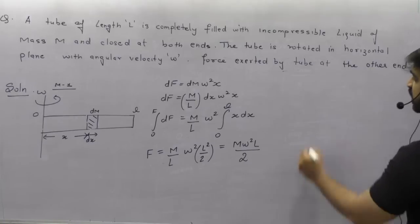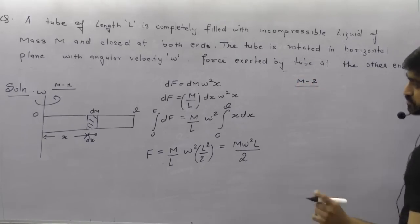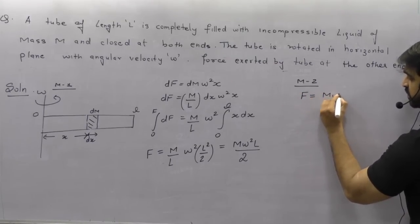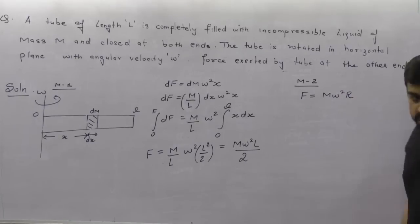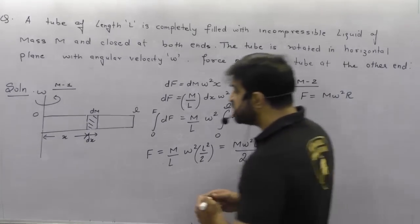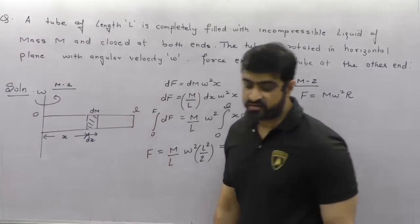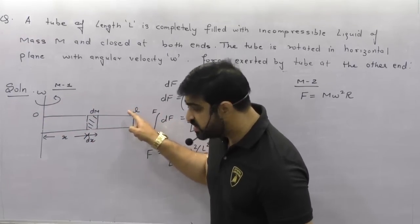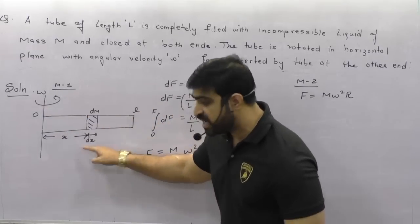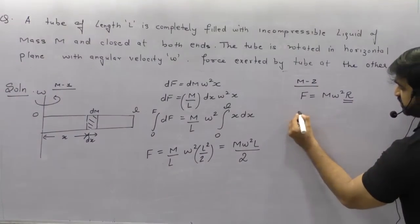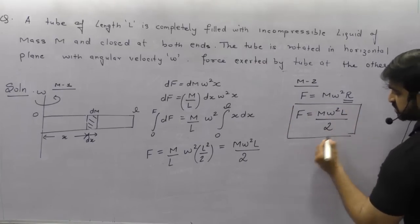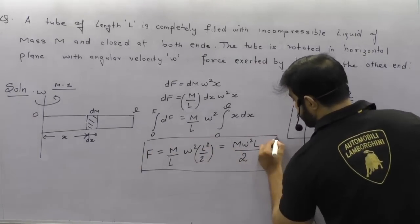There is another method using center of mass. The centripetal force formula is M·omega²·r. When applying Newton's law, concentrate the whole body at the center of mass. The center of mass of this tube is at L/2 from the axis. So F = M·omega²·(L/2), giving the same answer — both methods give M·omega²·L/2.